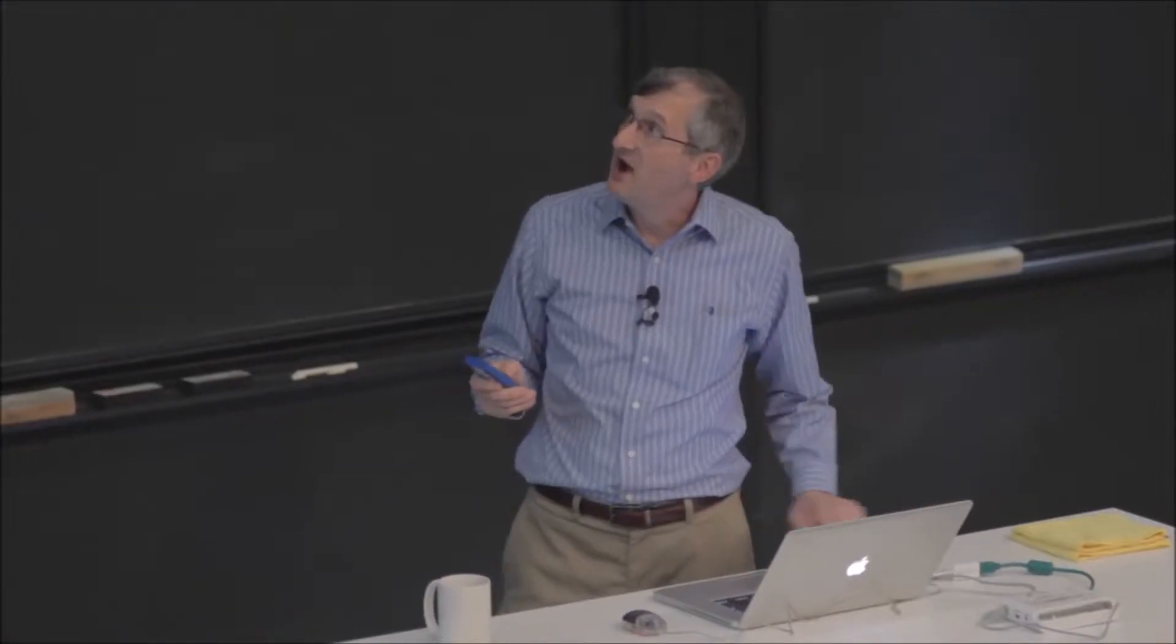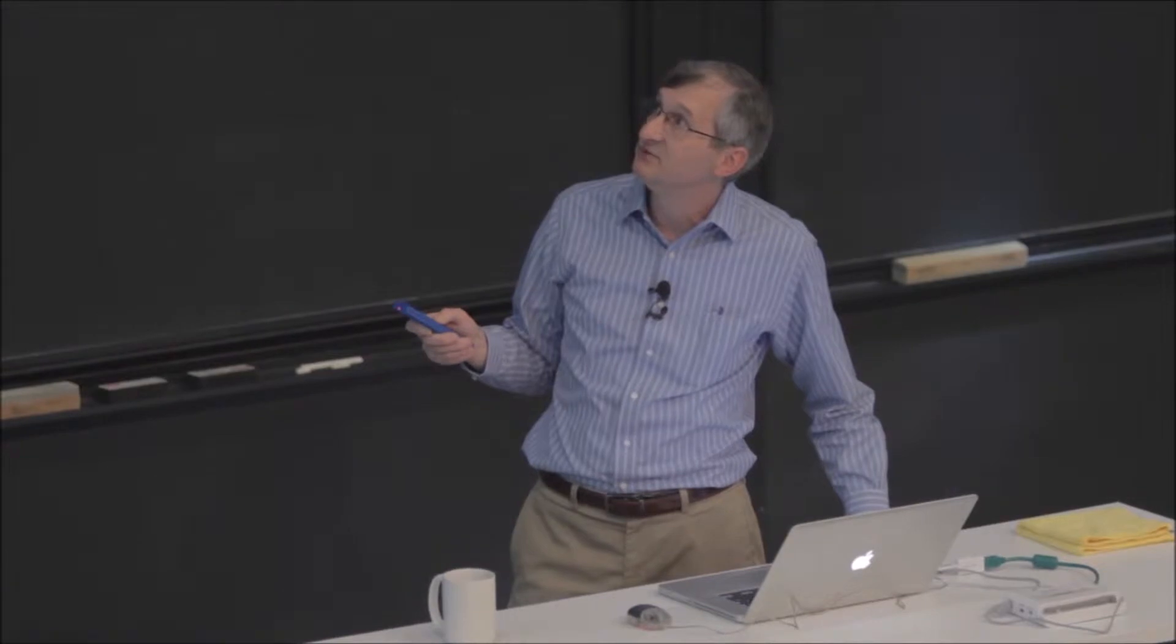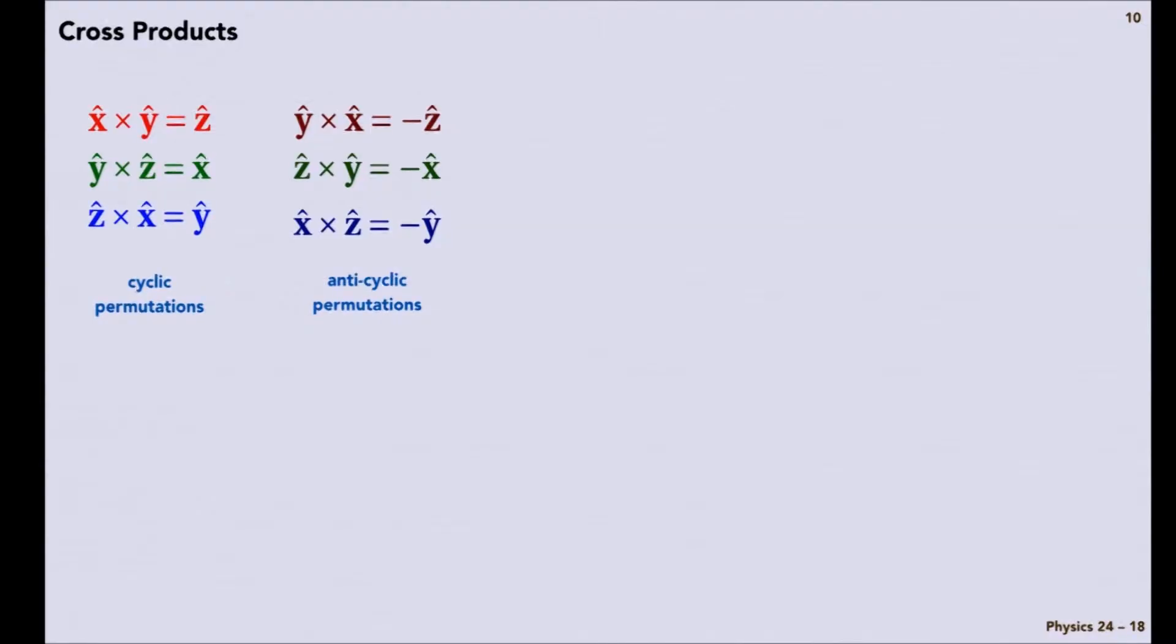But it's possible to screw this up, right? So we could have y cross x, and that works out to be negative z.